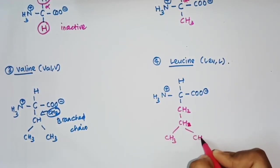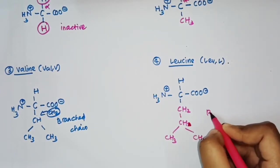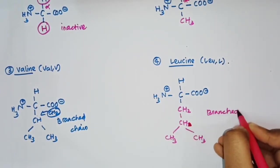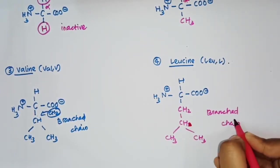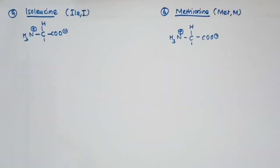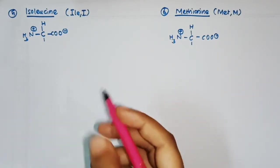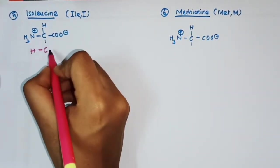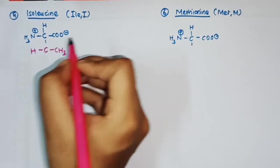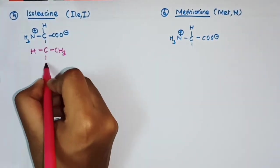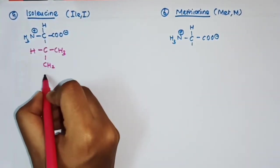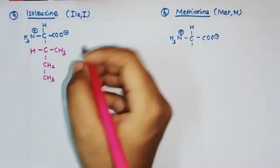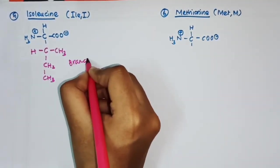Leucine and isoleucine also have branched-chain R groups containing multiple CH₃ groups. Both are classified as branched-chain amino acids.